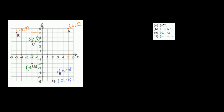Now let's go the other way — start with coordinates and figure out where those points are. The first one, lowercase a, is at 4 comma 2: x is equal to 4, y is equal to 2. So that's that point right there.